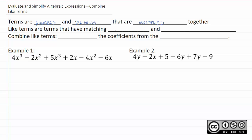Like terms are terms that have matching variables and exponents. Think of like terms as terms that are only different in their coefficients. So their variables are the exact same, their exponents are the exact same, but the numbers can be different.